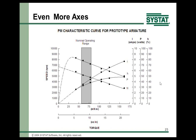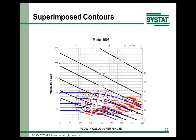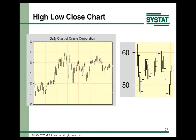Superimposed contour plots: three contour plots superimposed, used to help salesmen select particular pumps for water at a certain height and flow rate. High-low-close charts: here's a blowup showing the open, close, high, and low values.